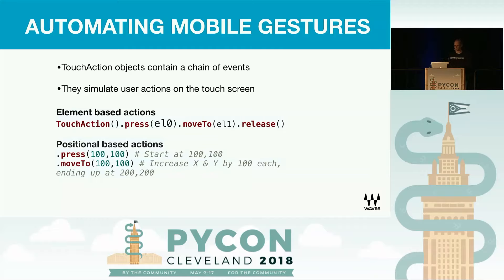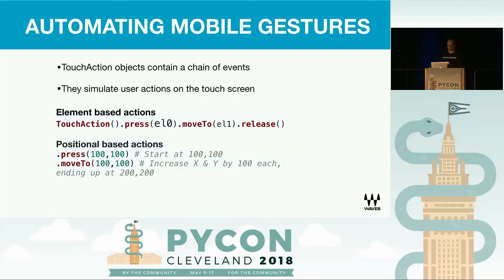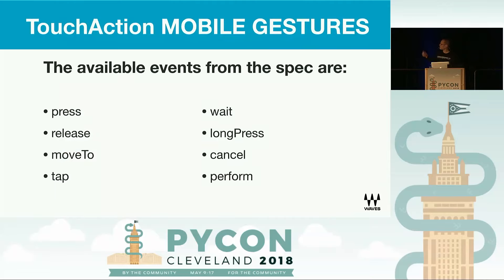Let's do some more exciting stuff. Touch screens behave very differently than a mouse — they have gestures. You can swipe, you can tap, you can enlarge, and do a lot of stuff. In order to automate this, Appium gives us a touch action object. Basically it contains a chain of events that simulates action as a user on the screen. What you see here is a touch action where you press on an element, then move it, and then release. You can also do positional-based actions. And Appium gives you all these actions such as press, release, move, tap, or wait.